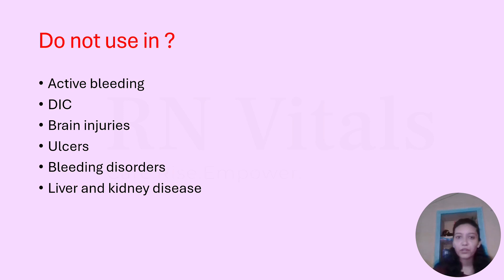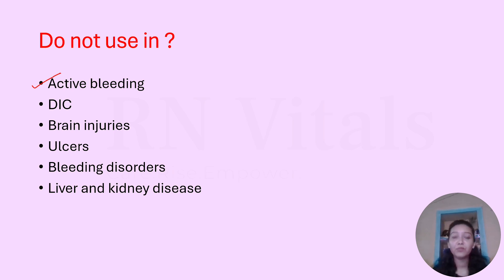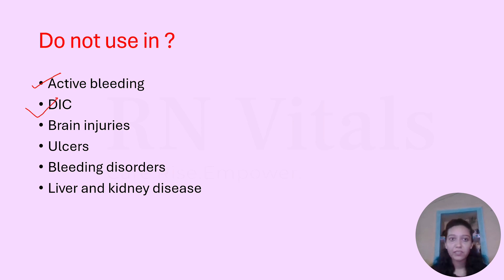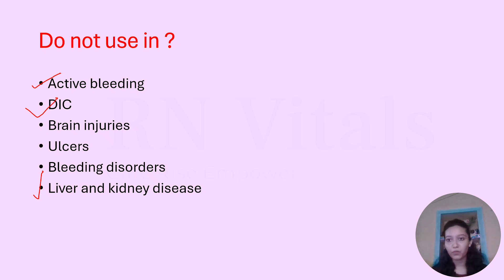Let us understand the contraindications of anticoagulants. First, common sense tells us that whenever a patient is bleeding, we want them to clot — so we do not give anticoagulants when the patient is actively bleeding or hemorrhaging. Second is DIC (disseminated intravascular coagulation). We also avoid them with brain injuries, ulcers, bleeding disorders, and liver or kidney disease.